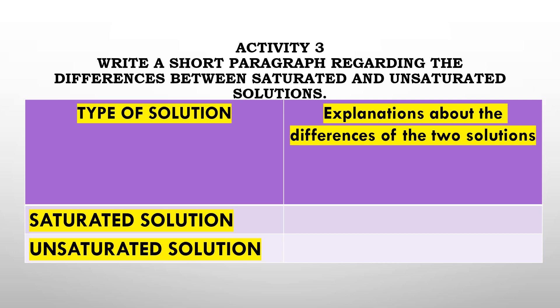In activity number 3, you need to write a short paragraph regarding the differences between saturated and unsaturated solutions. Type of solution: we have saturated solution and unsaturated solution. You need to explain about the difference between the two solutions here. Create a table like this or write in your notebook, and write about the differences between these two solutions.